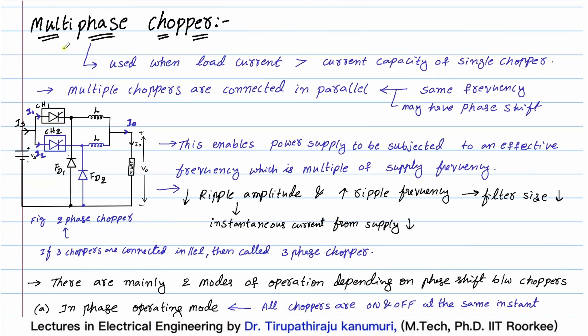Today we are going to discuss multi-phase choppers. Where is this multi-phase chopper used? Let us assume I have already designed one chopper circuit running some particular load. If my load requirement increases — meaning the load current or power required increases — the same chopper cannot be used. In that case, we will connect multiple choppers in parallel to supply the given load. That is called a multi-phase chopper, where each chopper circuit is taken as one phase.